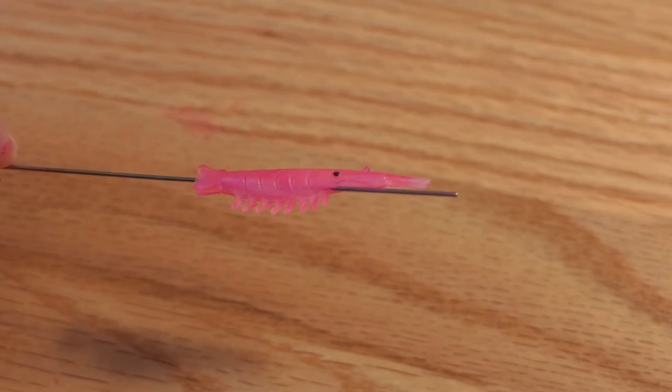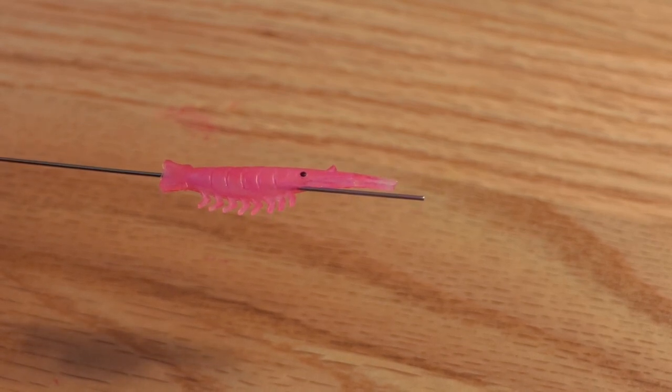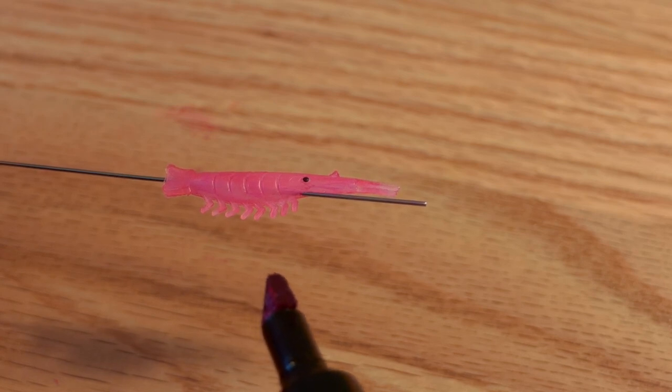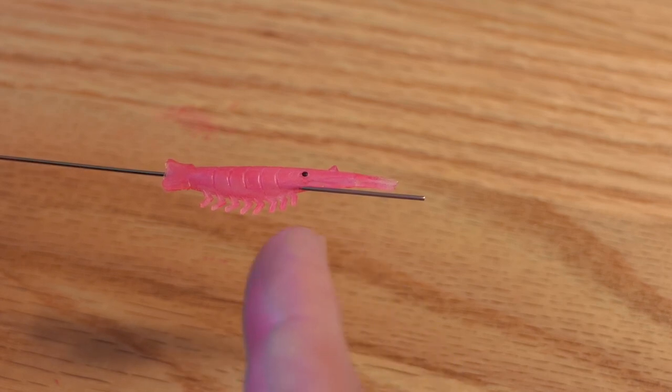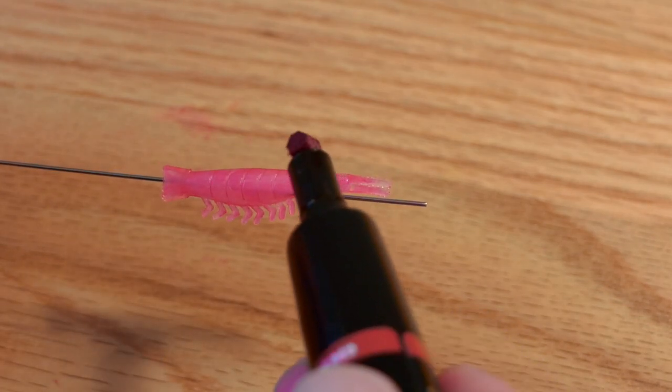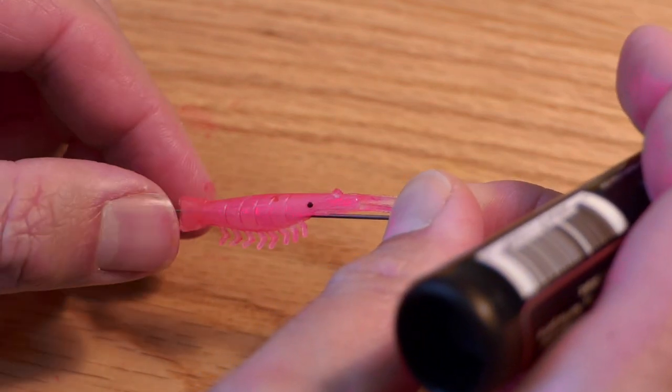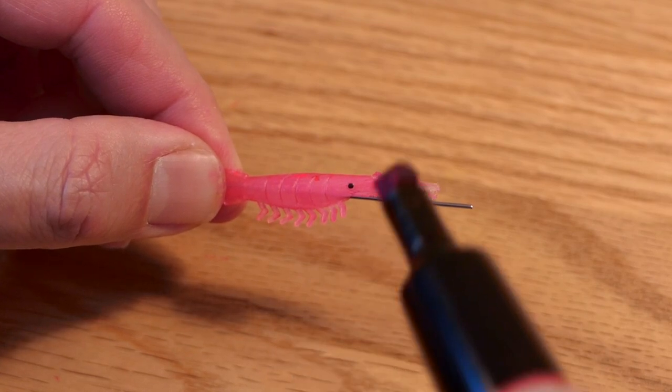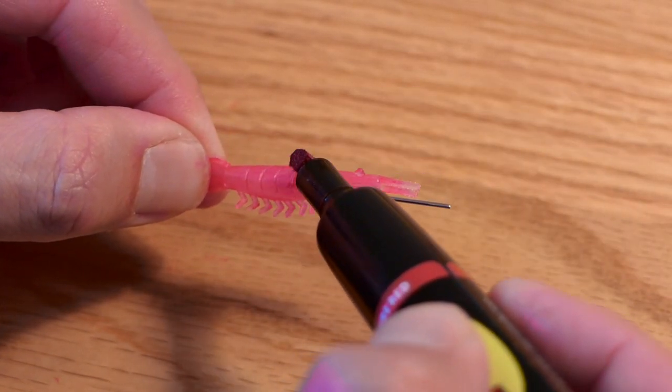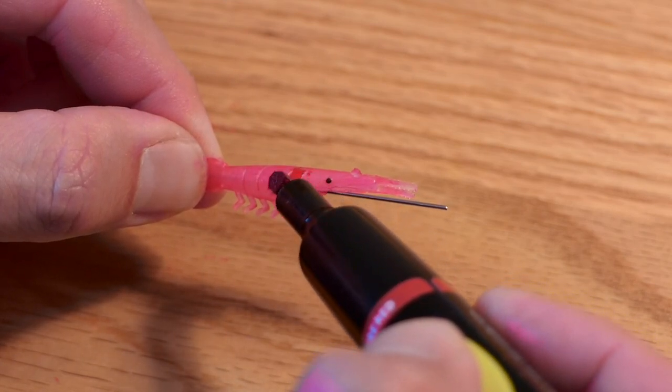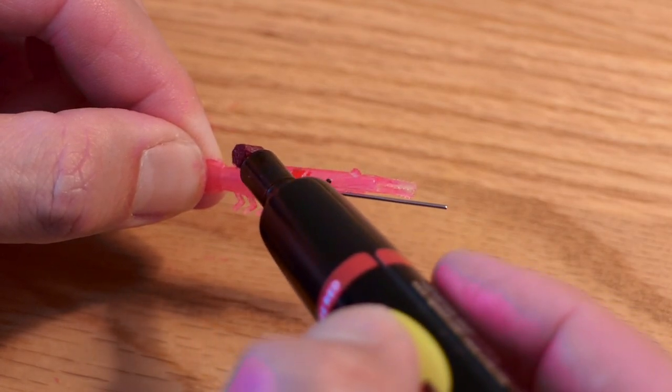Now another thing you might consider doing is multi-color. Just like with any paints, you can paint darker colors on top of lighter colors, but you can't go the opposite way. So here I have all pink shrimp and maybe I want to add some red barring. So what I can do is grip it so it doesn't rotate on that wire. And I have a red marker and I can go ahead and add some red barring down the sides here just to give it some more pattern.